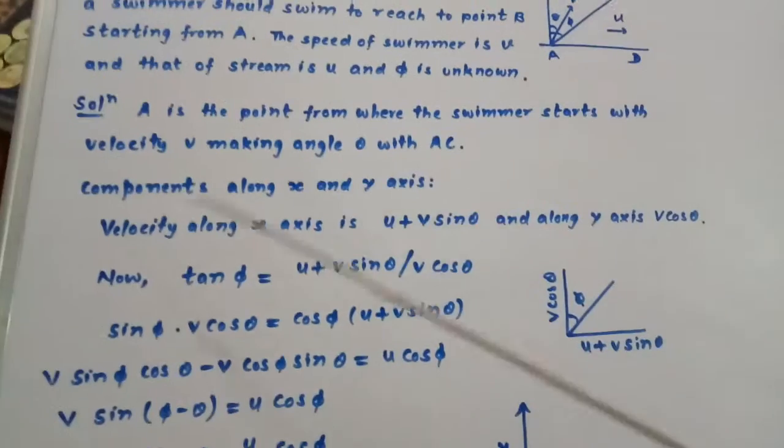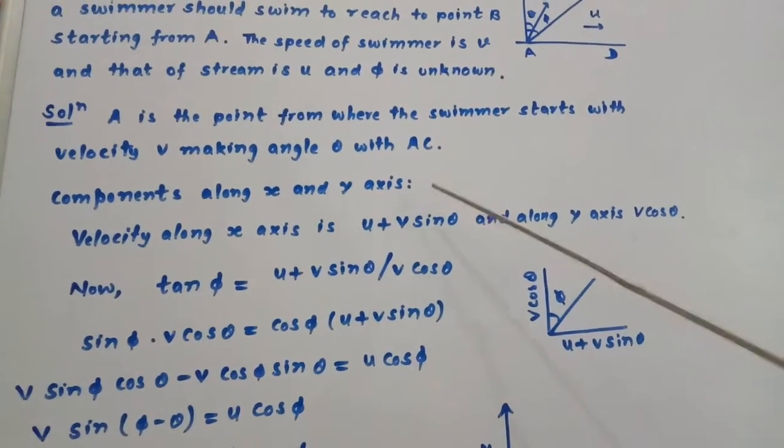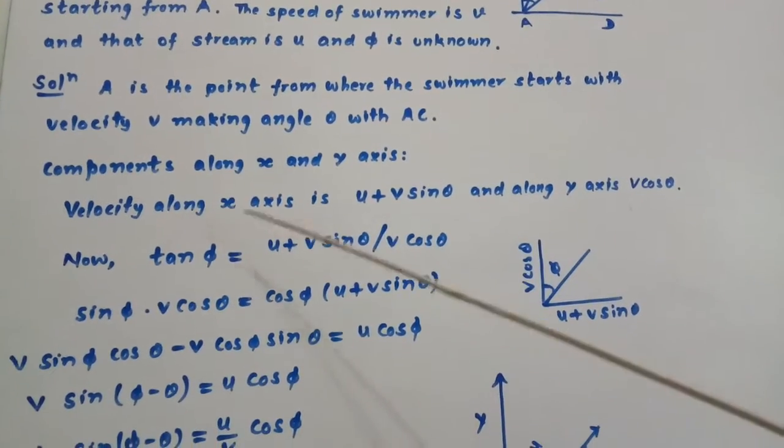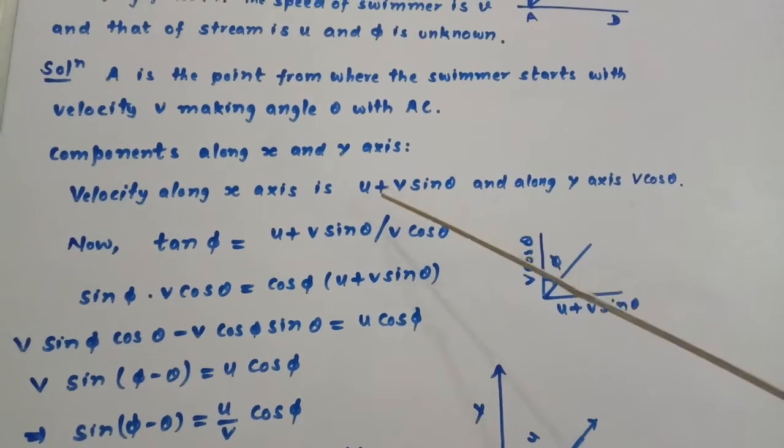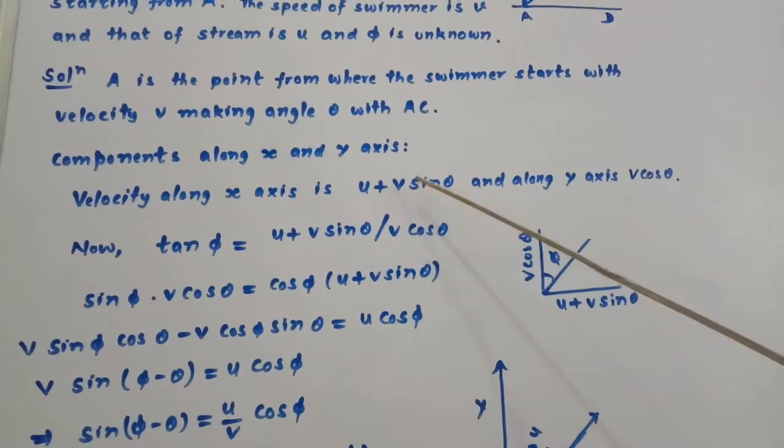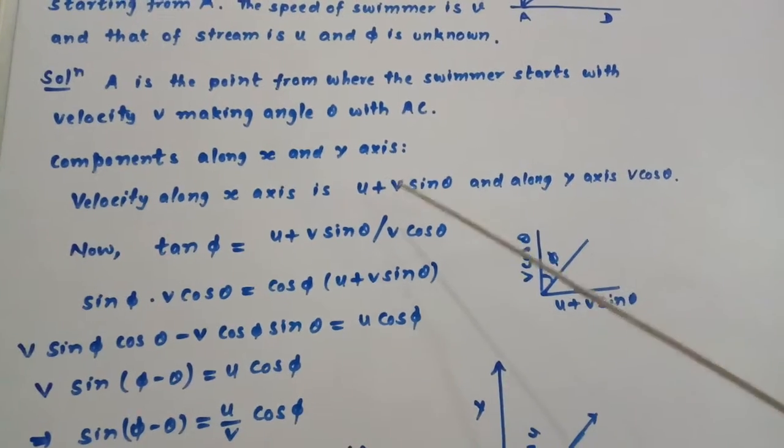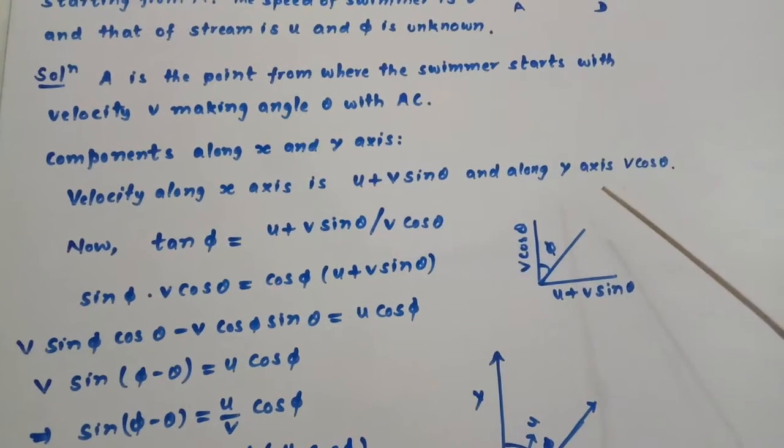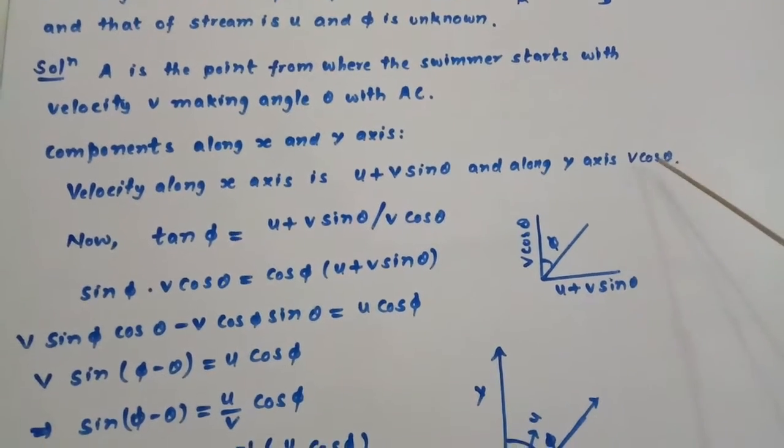Components along x and y axis: velocity along x-axis will be velocity of the stream plus component of velocity of the swimmer, so U plus V sin theta. And along y-axis it will be V cos theta.